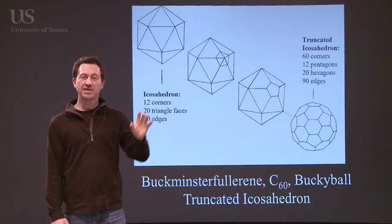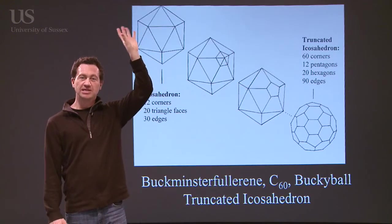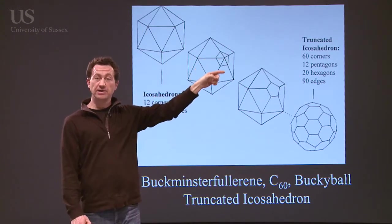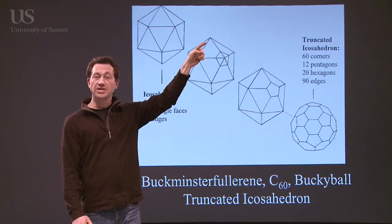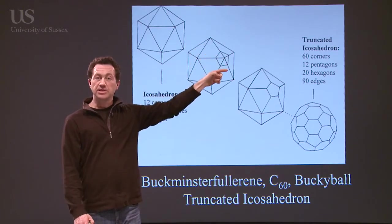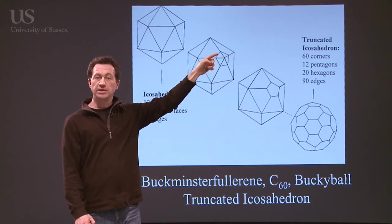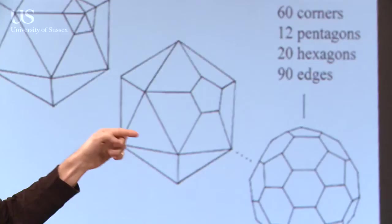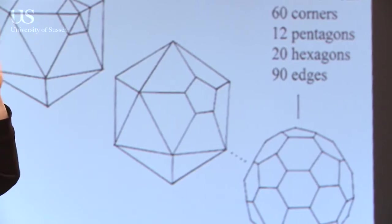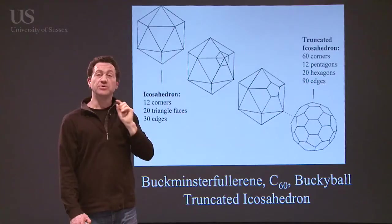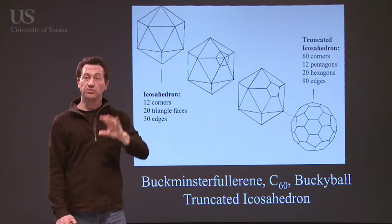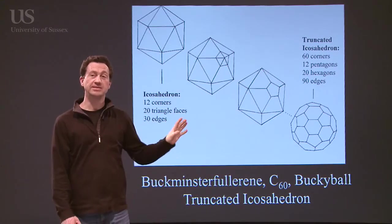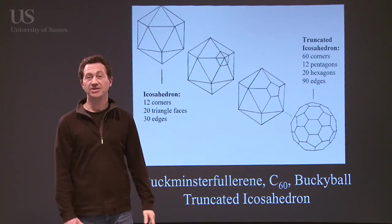If you look at the picture behind me here, this is an icosahedron. It's made of 20 triangles. It's got 12 corners. If we cut off a corner, which mathematicians call truncating, because there's five edges coming to each corner, you'd end up with a pentagon if you cut that off. And if you go around the other 12 corners on the icosahedron, you'd actually cut off 12 corners, and you'd end up with 12 pentagons left behind and 20 hexagons as well. So the actual mathematical name of a soccer ball and the C60 molecule is this truncated icosahedron.